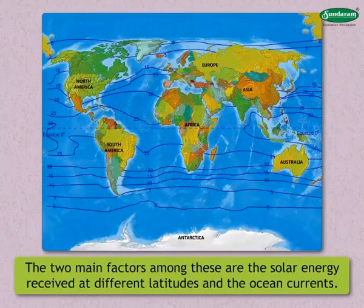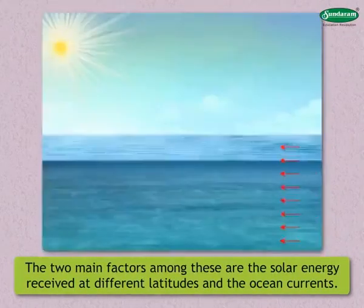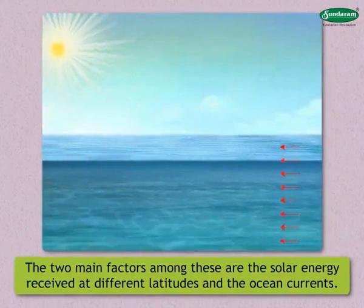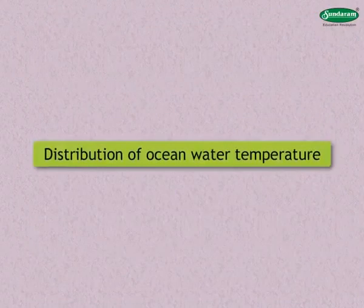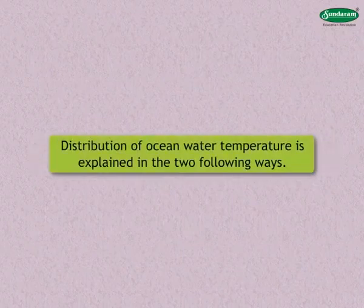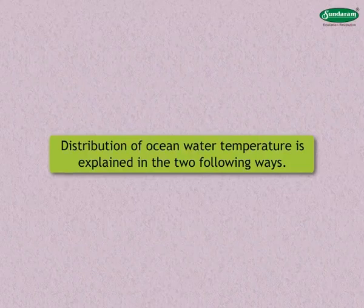The two main factors among these are the solar energy received at different latitudes and the ocean currents. Now let us see the distribution of ocean water temperature. The distribution of ocean water temperature is normally explained in the following two ways.